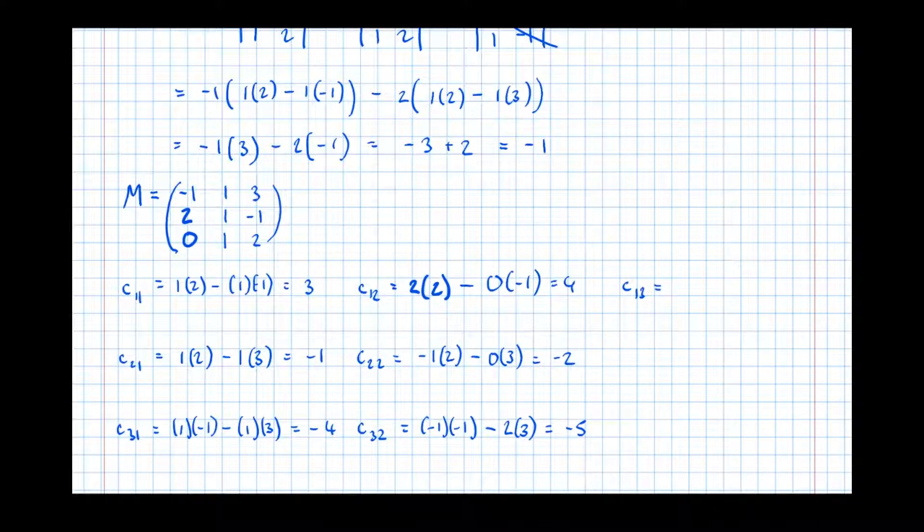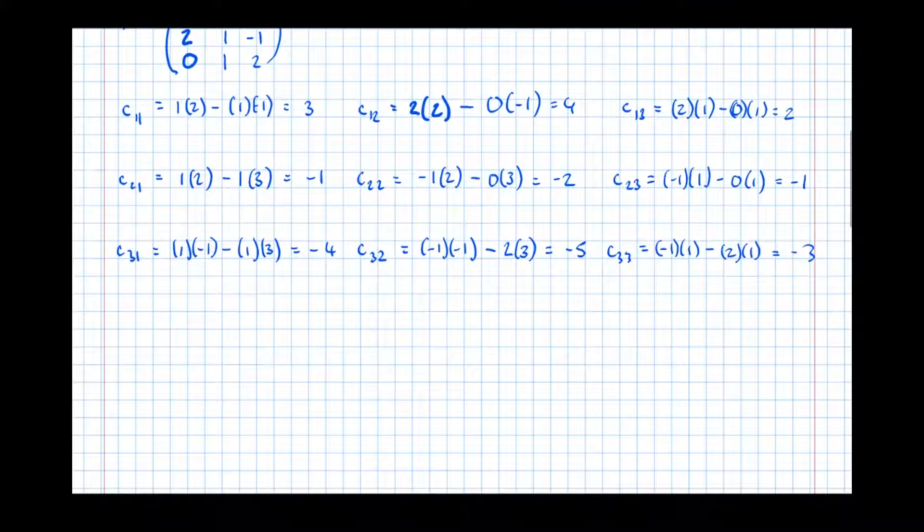C₂,₂, cover up the middle row and column, we get -1 times 2, take 0 times 3, equals -2. And then C₃,₂, third row, second column, we cover up that row and column corresponding to that value there. So we get -1 times -1, take 2 times 3, equals -5. Finally, C₁,₃ equals, so cover up the top right item and its row and column. Get 2 times 1, take 0 times 1, equals 2.